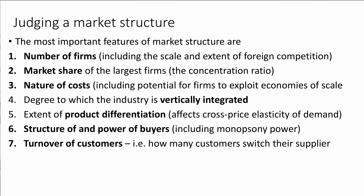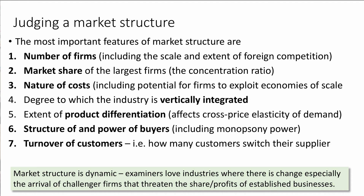The strength of substitutes influences cross price elasticity of demand. Increasingly at A-level we also think about the structure and power of buyers — is there evidence of monopsony power? We also consider the turnover of customers: to what extent are customers willing and able to switch their supplier? Examples include telecoms, banking, and food retailing. When consumer churn is high, the market structure often becomes more contestable over time. Crucially, market structure is dynamic, and examiners love industries where there is change — perhaps with challenger firms threatening established businesses.